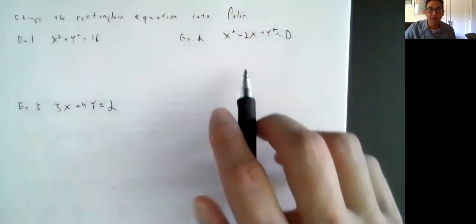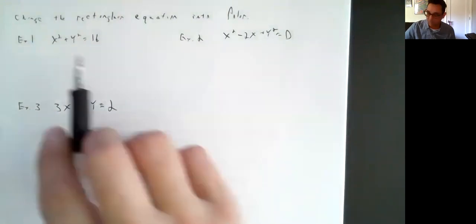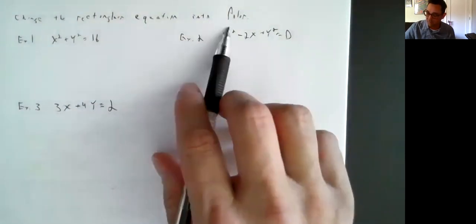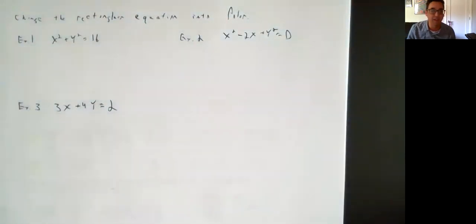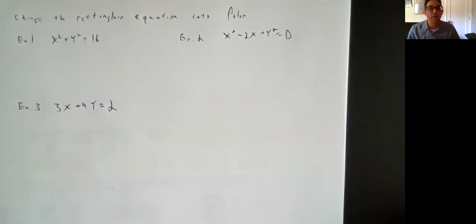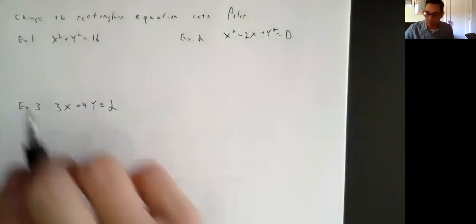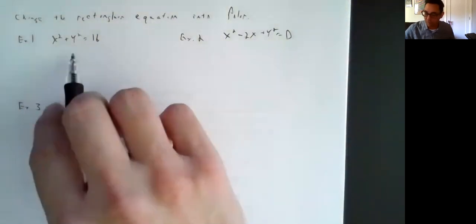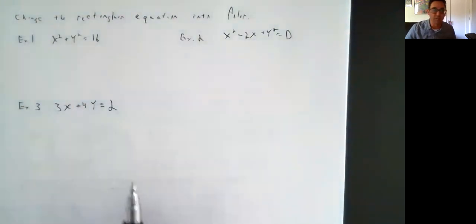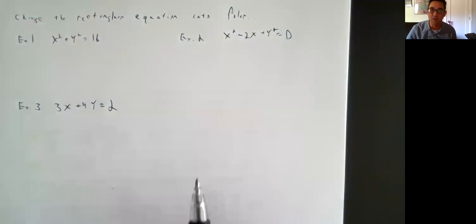Now we're going to do the exact opposite — go from rectangular to polar. These all start with x's and y's, which should feel more comfortable. We're going to put them back into polar form with r's and thetas, sines and cosines.